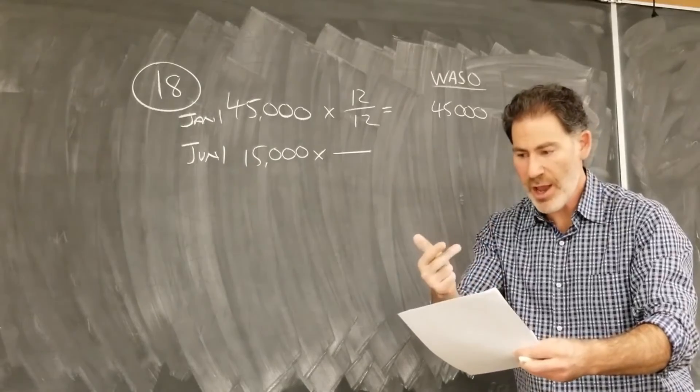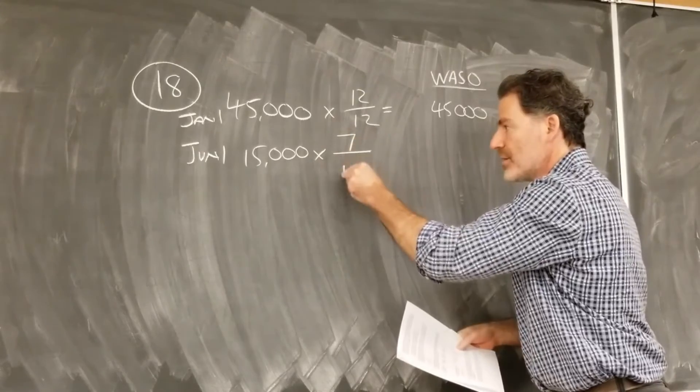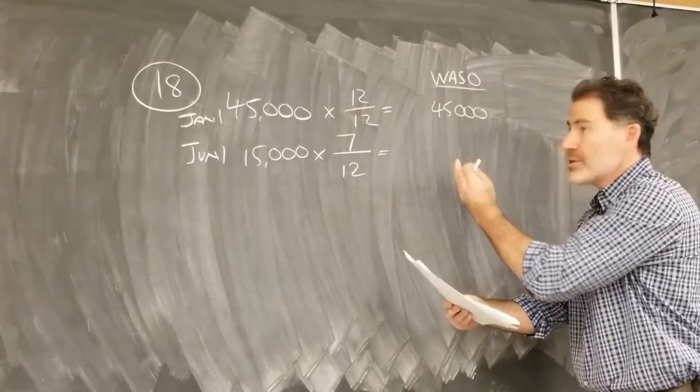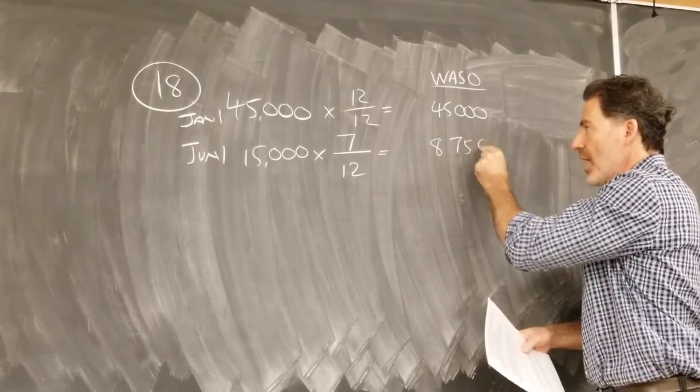So these are issued on June 1st. They're going to be outstanding for June, July, August, September, October, November, December, seven out of 12 months. So from my WASO formula, weighted average number of shares outstanding, these will count for 8,750 shares.